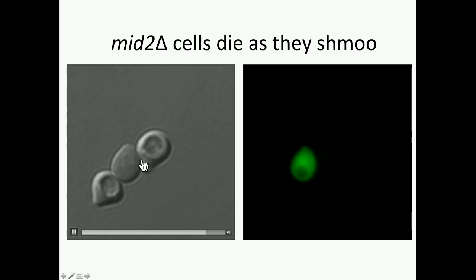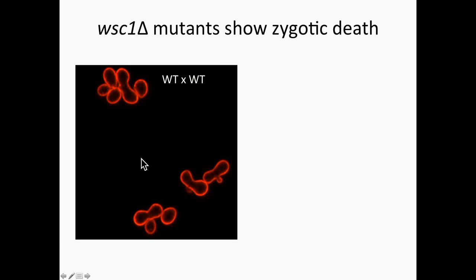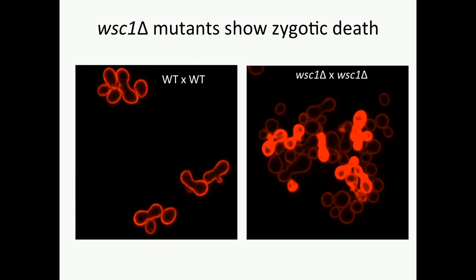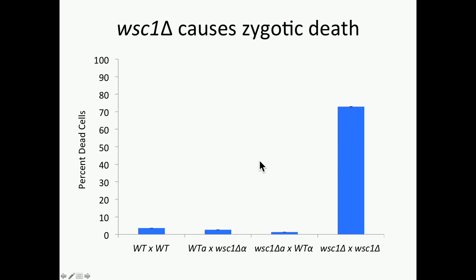WSC1 MATA cells are fine in response to pheromone alone, so we looked at them in terms of mating using FM4-64 staining. Wild-type by wild-type mating zygotes look nicely formed — no bright staining, no plasma membrane remaining between the two mating partners. However, in a WSC1 by WSC1 mating, you see really brightly stained zygotes, indicating that these zygotes have died. Quantifying this death, if either mating partner has a copy of WSC1 they don't die, but when both mating partners lack WSC1, you get this distinct increase in zygote death.